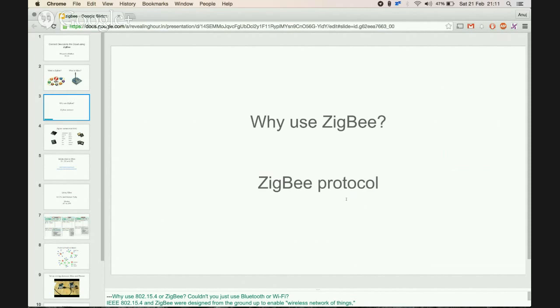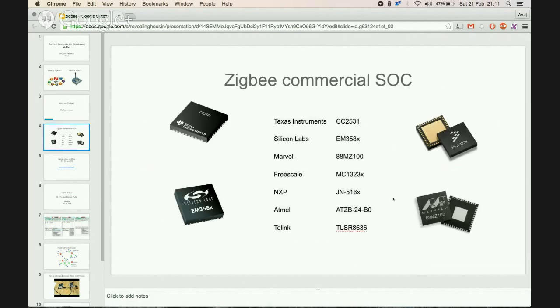It also has other features like 128 AES encryption and secured data connections. It has collision avoidance, retries, and acknowledgements. We'll talk more about this when we discuss the various AT mode and API mode networks in ZigBee.